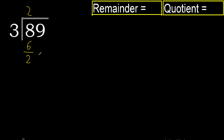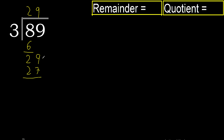Now with 29. 3 multiplied by 9 is 27, 29 minus 27 is 2. There is no number that goes down, therefore finish.